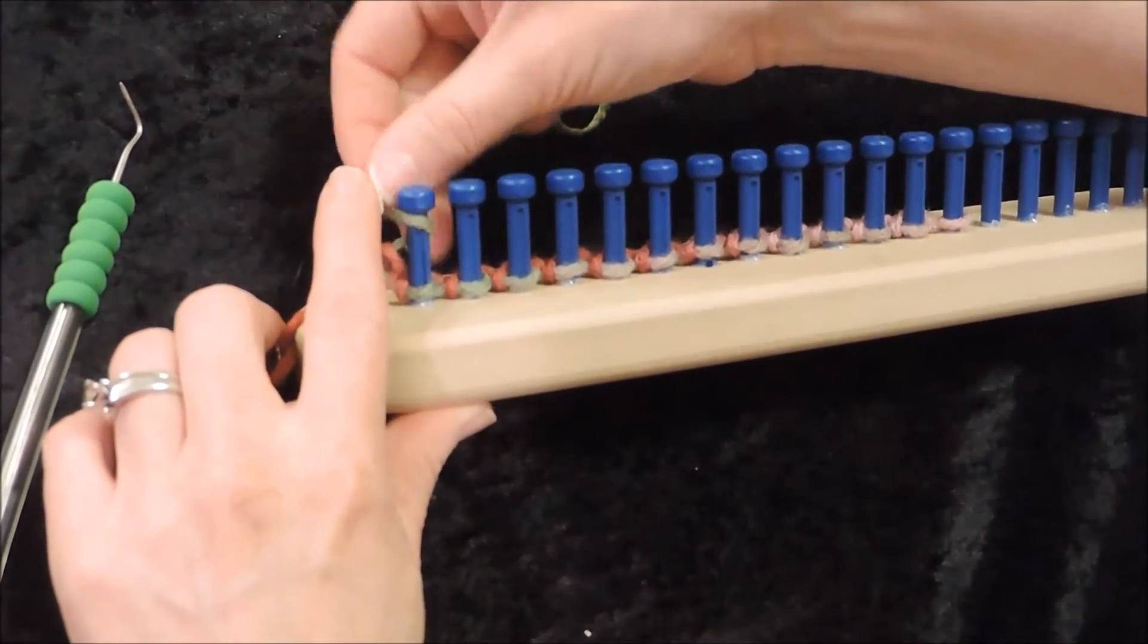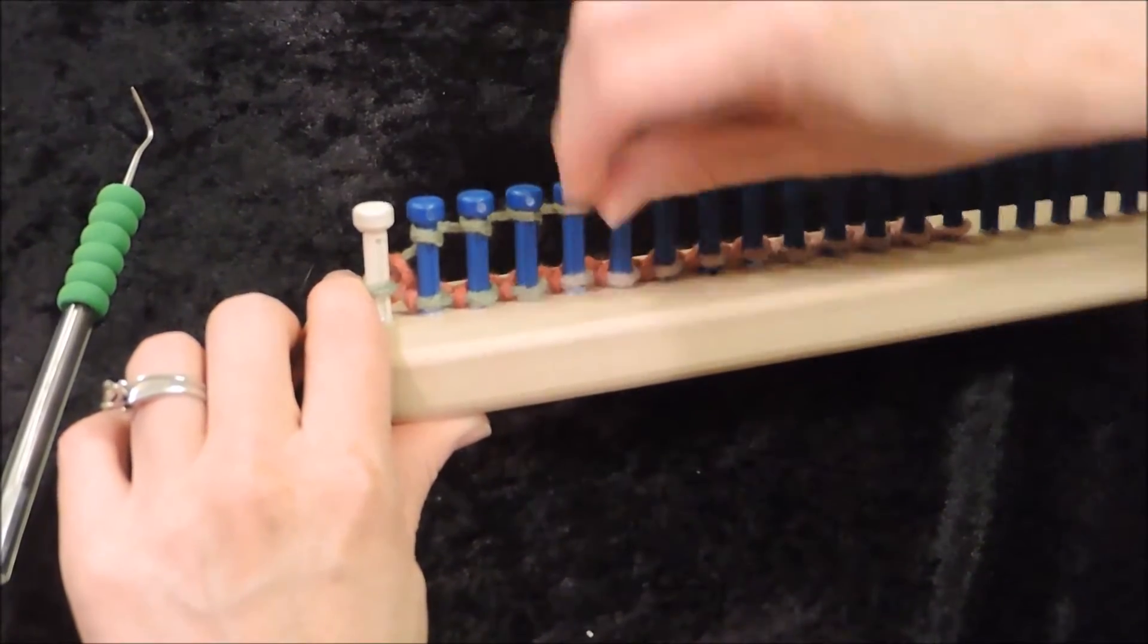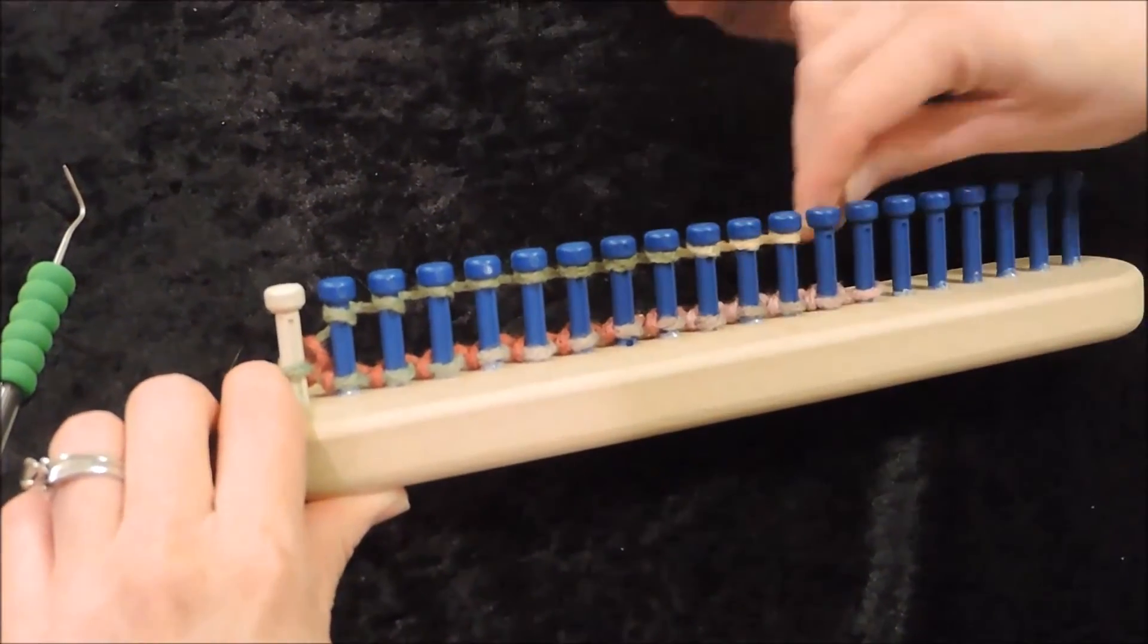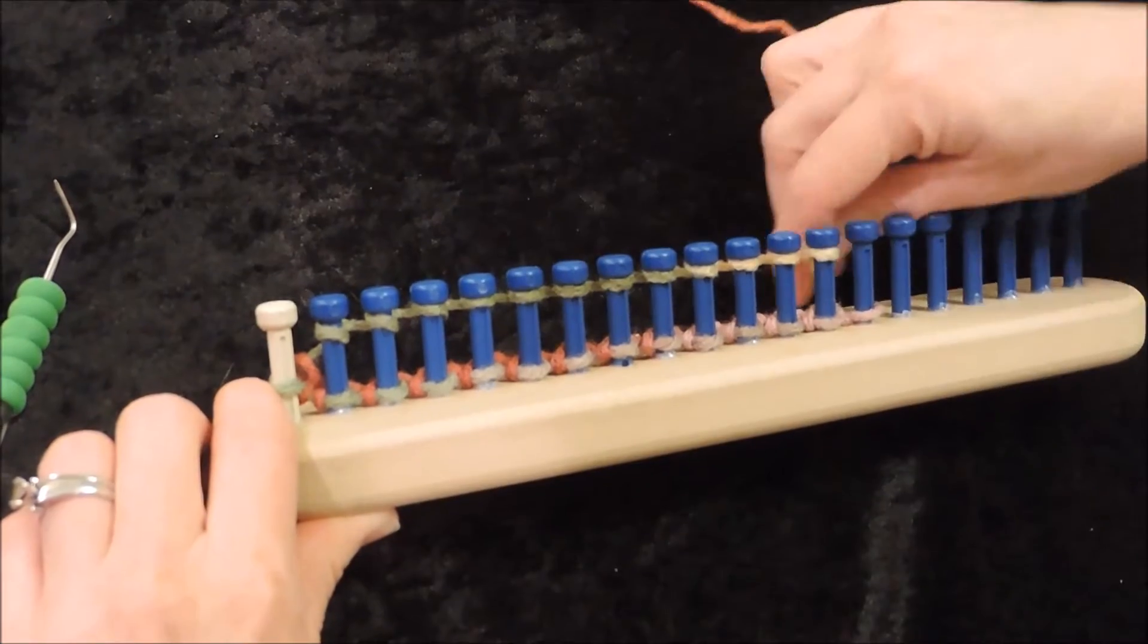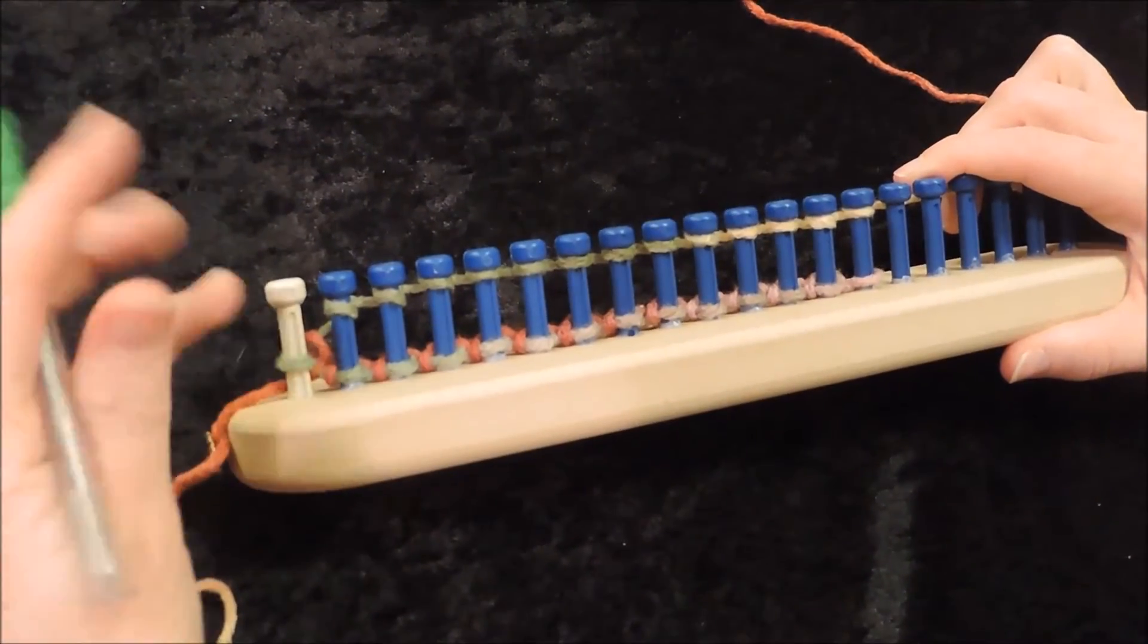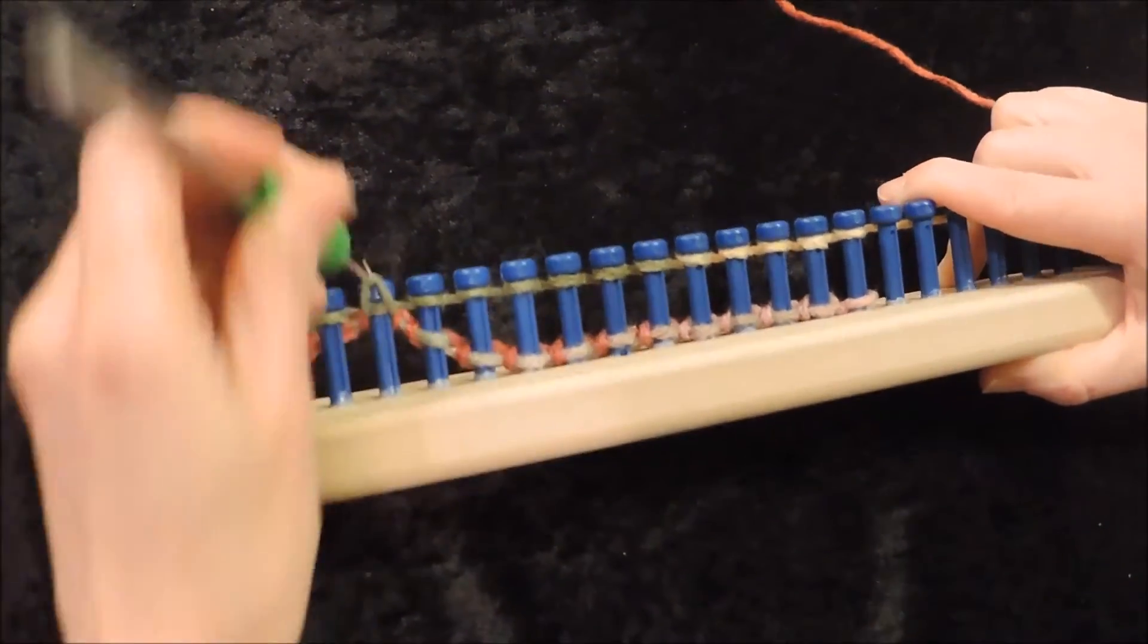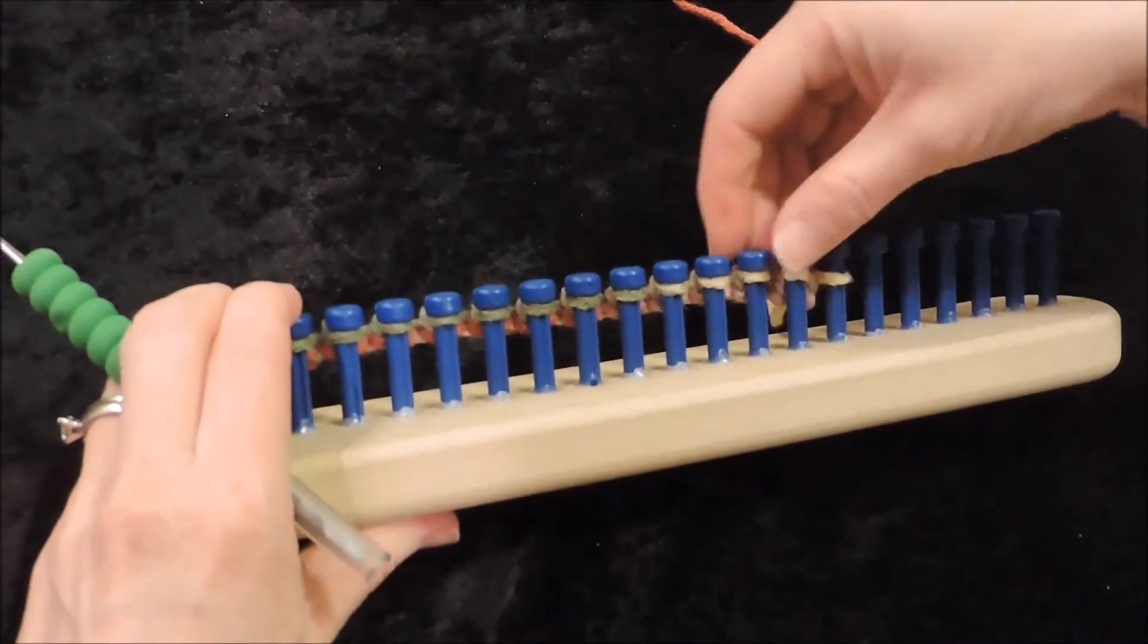I'm going to not wrap the first peg and I'm just going to start with the second peg and e-wrap all the way down. And I do e-wrap that last peg going this direction. And then pick over.